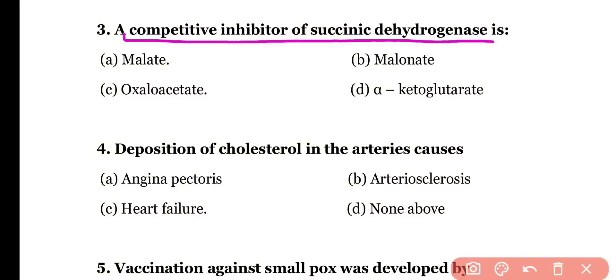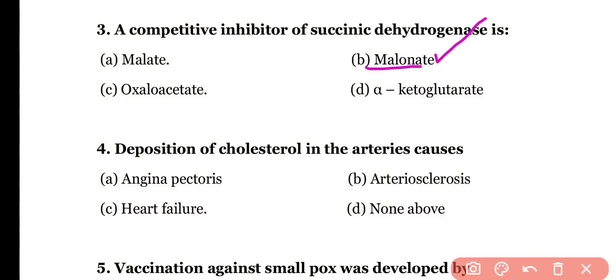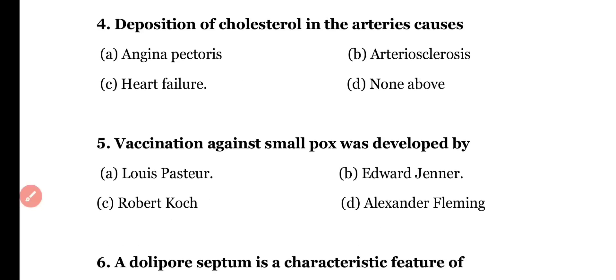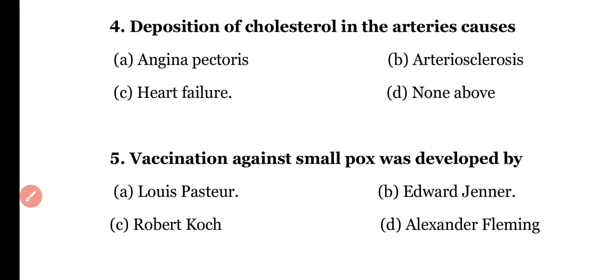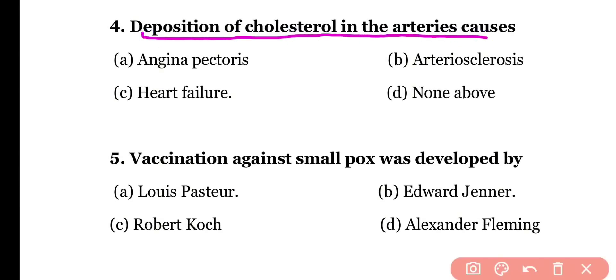Question number three: a competitive inhibitor of succinic dehydrogenase is (a) malate, (b) malonate, (c) oxaloacetate, or (d) alpha-ketoglutarate. The correct answer is option B — malonic acid or malonate is a competitive inhibitor of the enzyme succinic dehydrogenase.